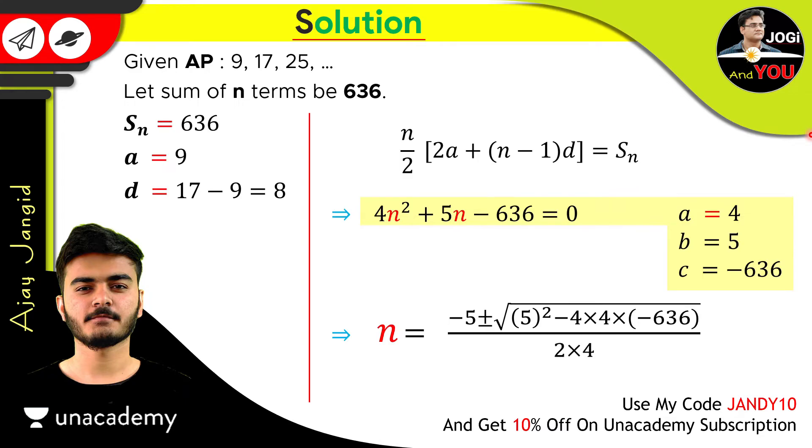Now we have the value of n, which is n is equal to minus 5 plus minus under the root 5 square minus 4 into 4 into minus 636 upon 2 into 4. And after calculating, here we have under the root 25 plus 10176. And then we have this, and then we just have this.